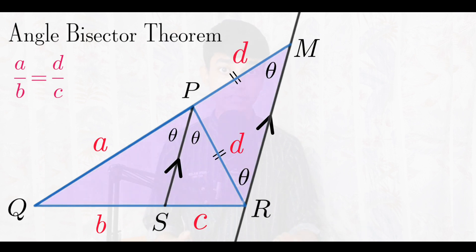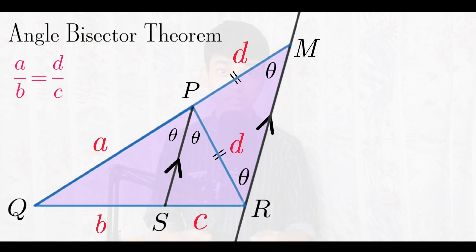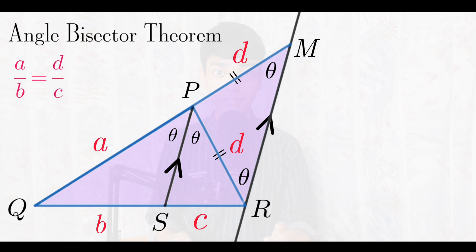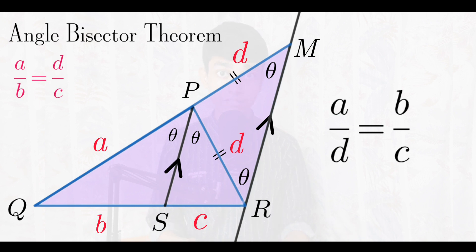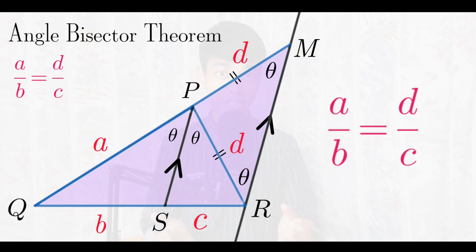Now take triangle QMR. In this triangle, segment PS is parallel to MR, so we can use the basic proportionality theorem — Michael Penn has a nice video on it, the link is in the description. The basic proportionality theorem states that if a line in a triangle is parallel to one side, it bisects the other two sides in equal ratio. Therefore a over d equals b over c, and after cross multiplication we get a over b equals d over c. So the ratios are equal, confirming that the angle bisector theorem is correct.